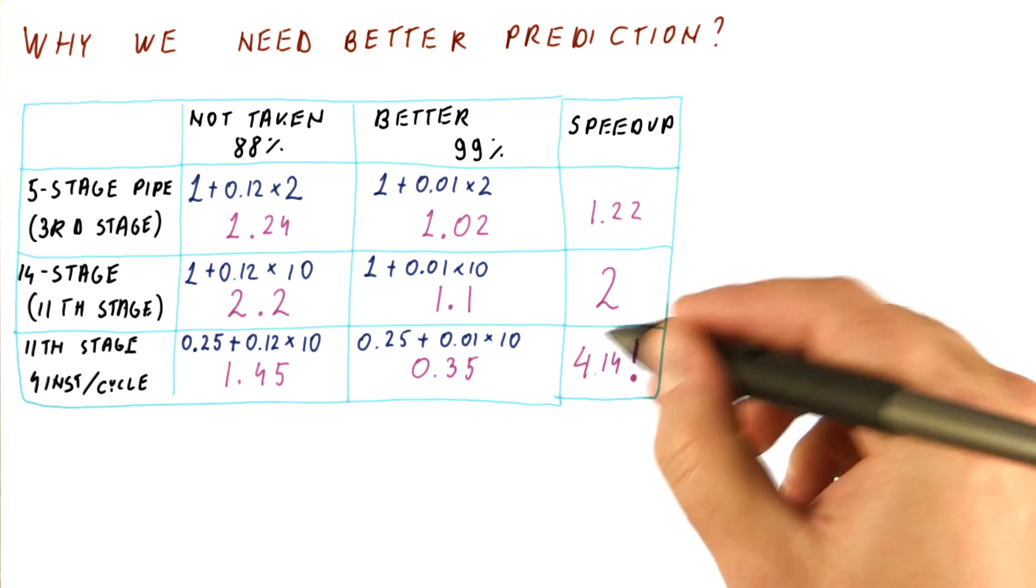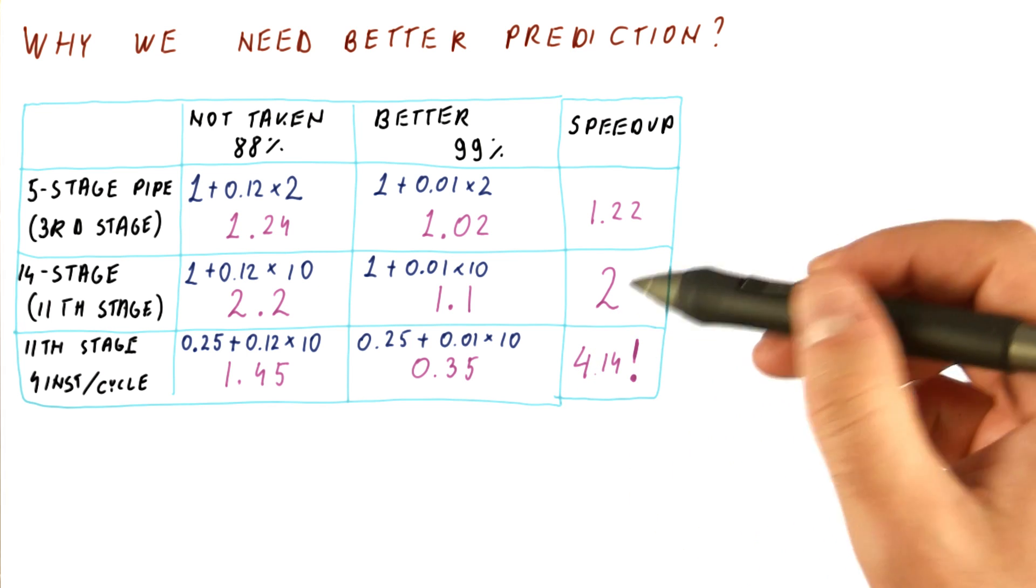If we compute the speedup, it's 4.14. So as you can see, if we have a deeper pipeline or if we are able to execute more instructions per cycle, then the better predictor is more important than in simpler processors.